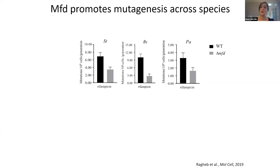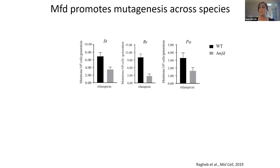I mentioned MTB before — the agent that causes TB. We wanted to see if MTB would display the same phenotype, so we went into BSL-3 facilities and did these experiments. Indeed, this is conserved. Rifampicin is a frontline drug for TB treatment, but so are ethambutol and ciprofloxacin. In all cases we looked at, we found that mutation rates are lower when you don't have MFD. This is all in the absence of exogenous damage — so this is the baseline. The differences are kind of small — about two to threefold decrease in mutation rates.